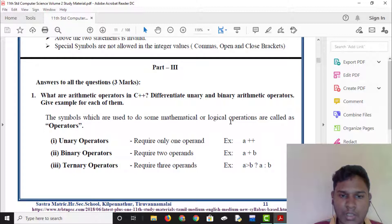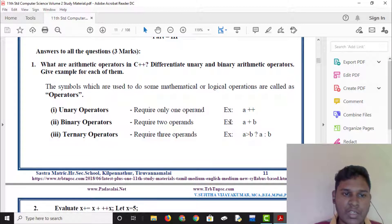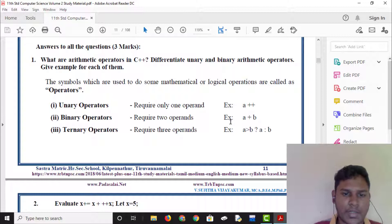What are arithmetic operators in C++? Differentiate unary and binary arithmetic operators. Give example for each of the items. Unary operators are plus plus, minus minus. The prefix increment or prefix decrement. There are two operands. Unary operator requires one operand. Binary operator requires two operands. Ternary operator means three operands. Ternary operator means a question mark and colon.